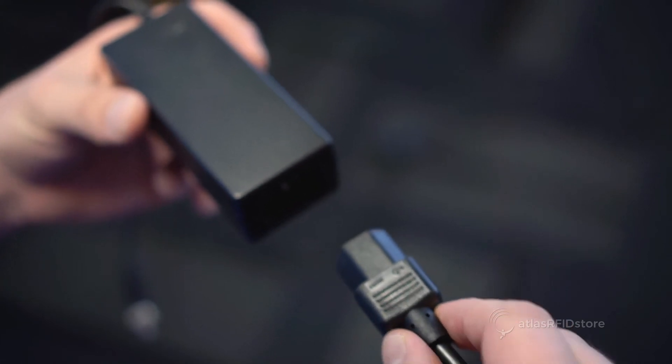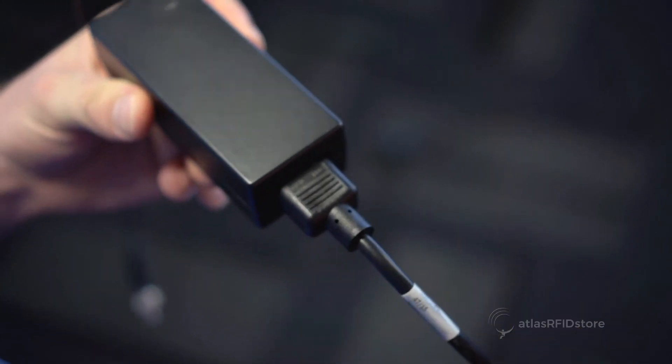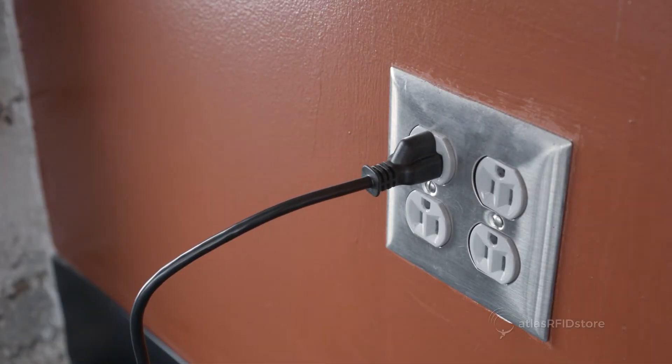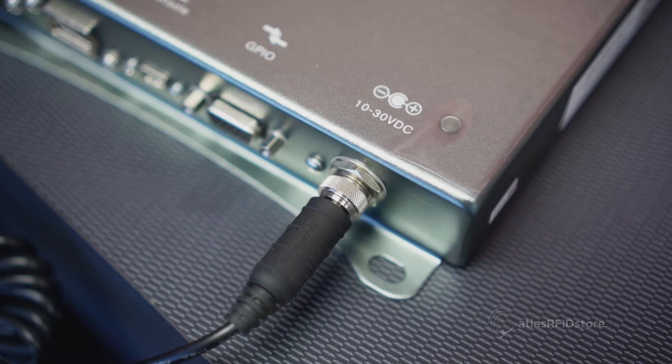First, you will want to put the ThingMagic power supply together and connect it from your reader to your power source. Once your power supply is connected, you will see the power indicator light turn on.